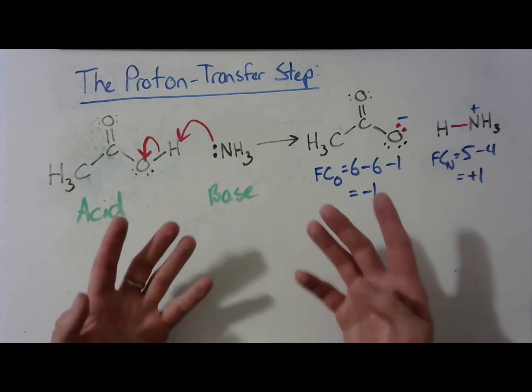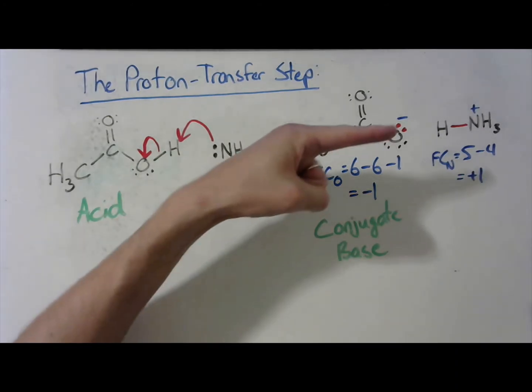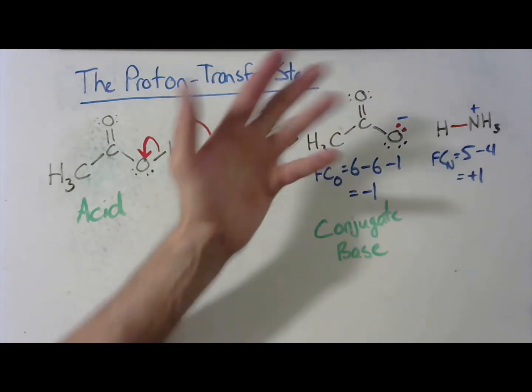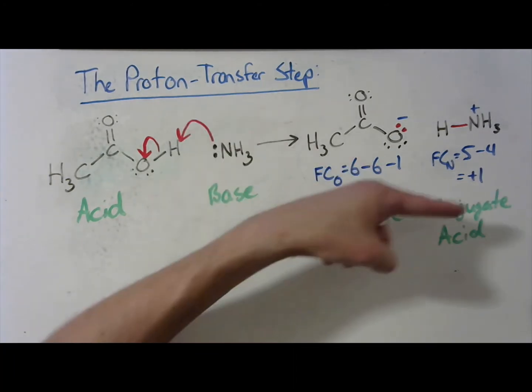Because we have changed the charges on these two atoms, this oxygen is now basic. And in fact, this is called the conjugate base of this reaction. This ammonia, now that it has this positive charge on here, is now acidic. So it's now called the conjugate acid. Like that.